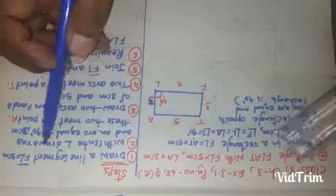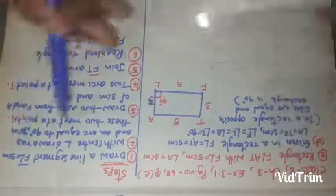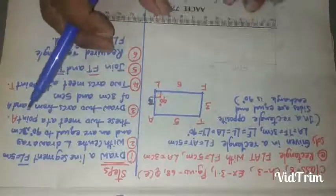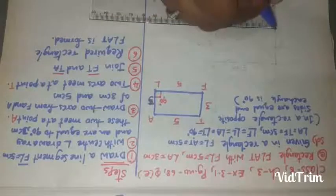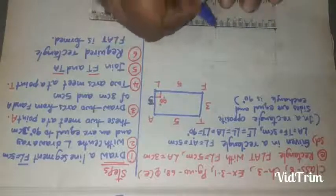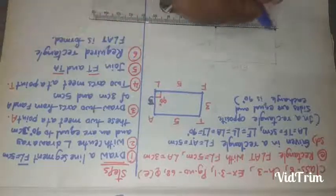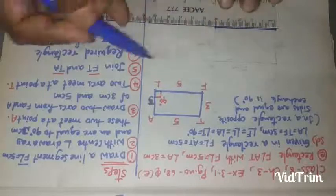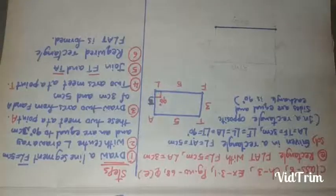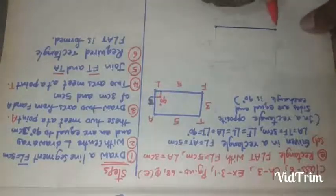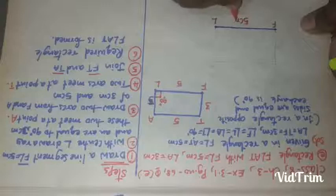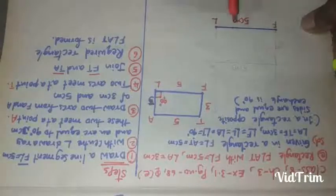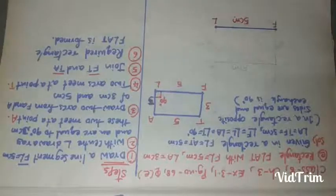Now let us start the construction. The first step: draw a line segment FL equals 5 centimeters. The first point is F, the next point is L, and we take FL as 5 centimeters.